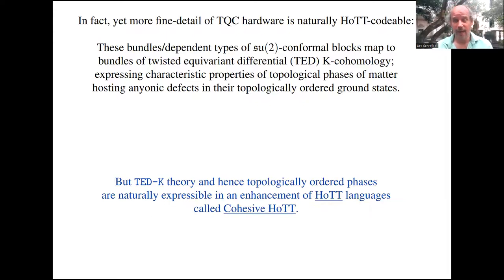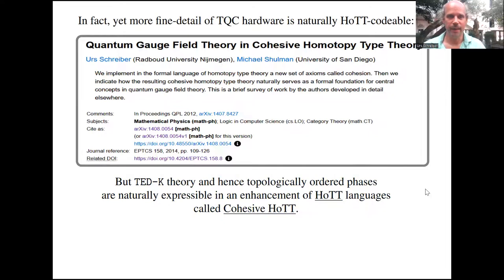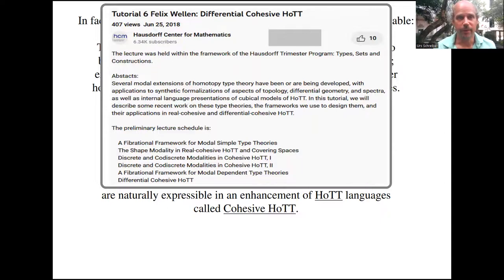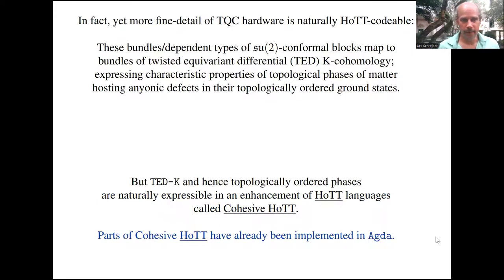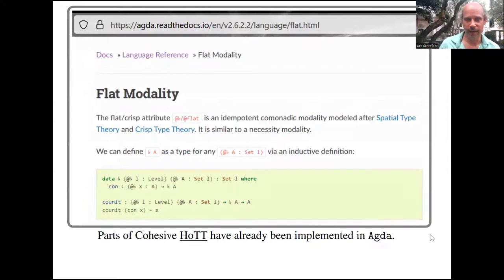The point is that TED-K-theory, and hence topologically ordered phases, are not quite encodable in plain homotopy type theory language, but one only has to add a little bit to these languages and make them what we call cohesive. Cohesive homotopy type theory is something I introduced in my habilitation thesis and then we developed it. Michael Shulman developed it quite a bit studying this article. If you want to dig into this, I can recommend these video recordings of lectures that my former PhD student Felix made, where he introduces these concepts and works through them.